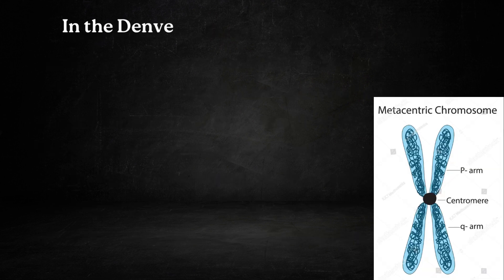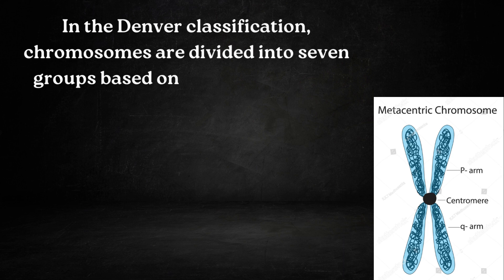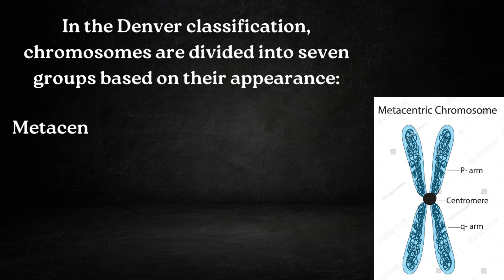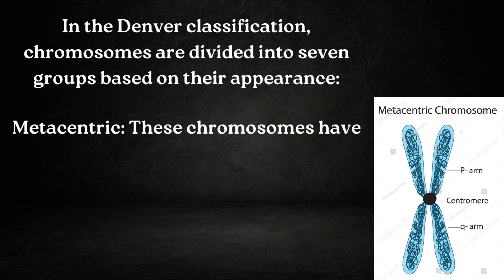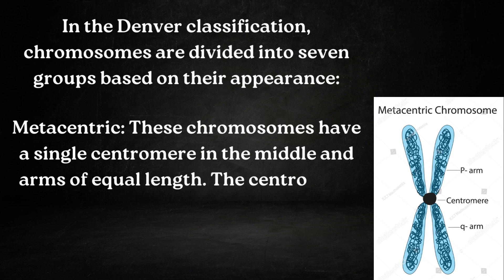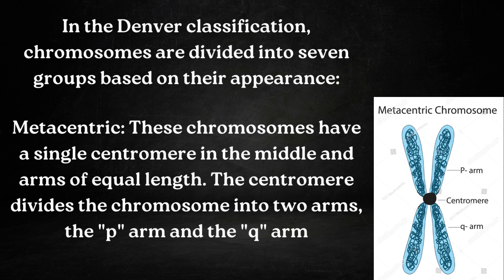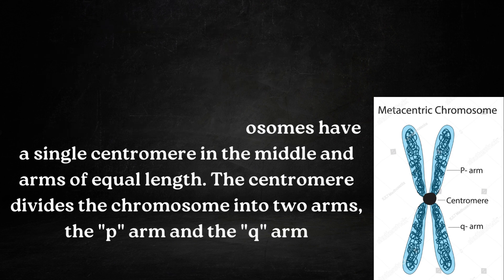In the Denver classification, chromosomes are divided into seven groups based on their appearance. First, metacentric chromosomes. These chromosomes have a single centromere in the middle and arms of equal length. The centromere divides the chromosome into two arms: the p-arm and the q-arm.